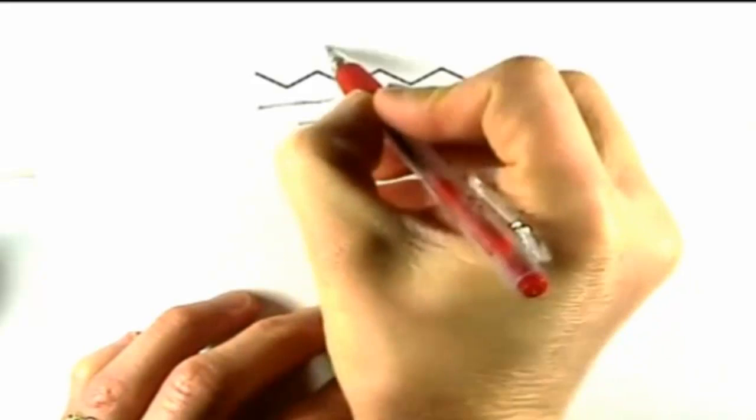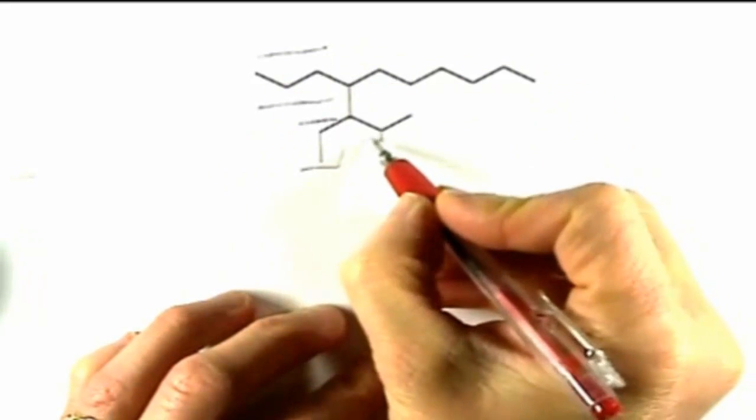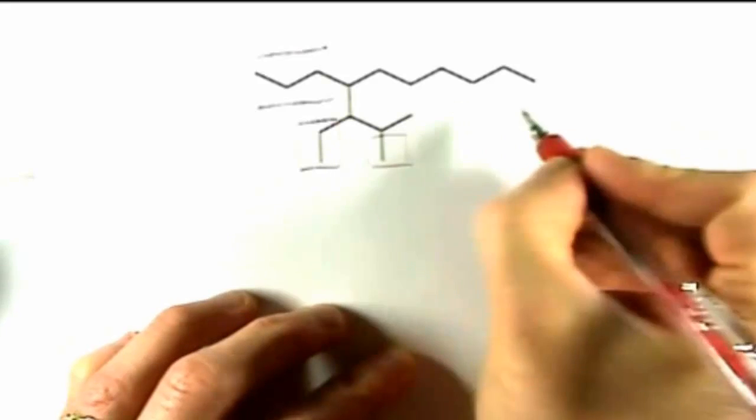One branch is this. Another branch would be that group. And the final branch would be this one right here.